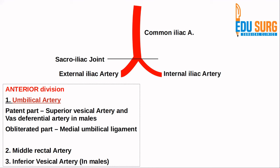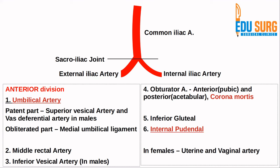The anterior division of the internal iliac artery has some important branches, and these differ between males and females — so this needs to be remembered very carefully, as it is very commonly asked in anatomy exams. The first branch is the umbilical artery. The obliterated part of the umbilical artery becomes the medial umbilical ligament — note that median refers to the urachus, while medial refers to the obliterated umbilical artery. The patent part of the umbilical artery becomes the superior vesical artery and the artery to the vas deferens in males. Other branches include the middle rectal artery; the inferior vesical artery, which is present only in males; and the inferior gluteal and internal pudendal arteries.